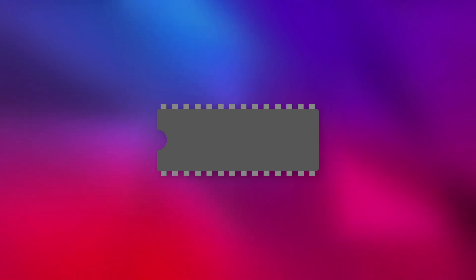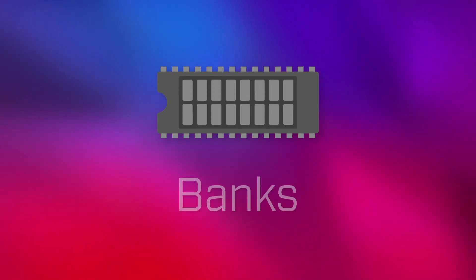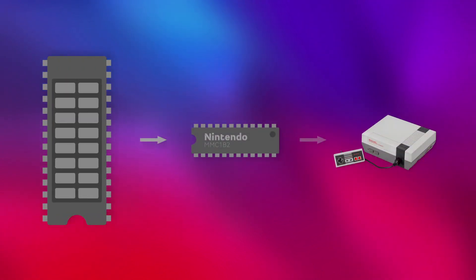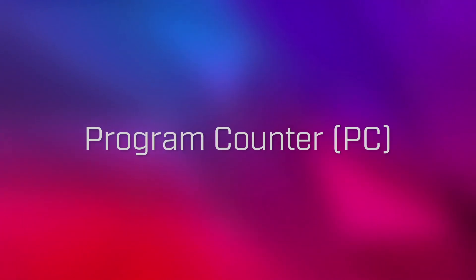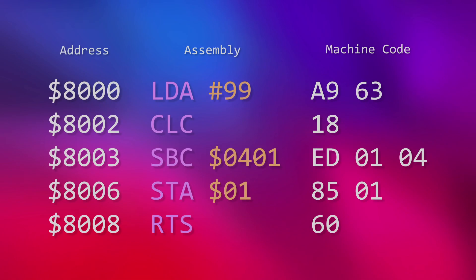In the last episode, I explained that Final Fantasy's program ROM is split into a set of 16 sections called banks, and that these banks are mapped to the last 32 kilobytes of memory via the game's MMC1 mapper chip. The 6502 on the NES stores a special internal variable called the program counter, and this counter always contains a value that corresponds to an address in that last 32 kilobytes of memory. This is how the processor knows what instruction of the game's program to execute next — it literally reads the machine code directly from the mapped memory.